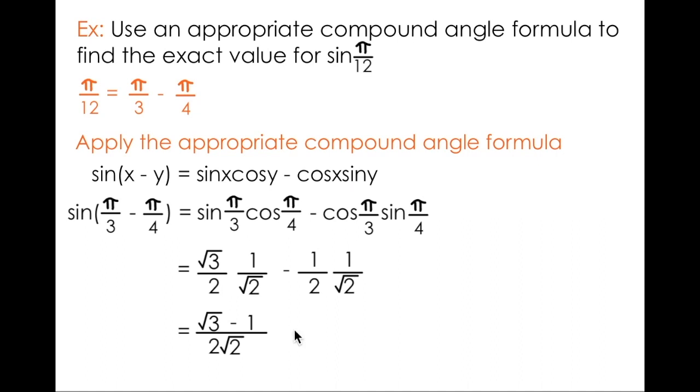It seems like a lot of work just to find an exact value for sine of pi over 12, especially since if we weren't looking for the exact value, we could just type in sine of pi over 12 in our calculator in radian mode, and we'd get 0.2588, which happens to be the value of this monster. But remember, exact values, super important in trigonometry.